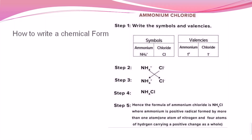Now, how to write a chemical formula — taking the example of ammonium chloride. First we write the symbols and their valencies. Ammonium is NH4 with a positive charge, and chloride is Cl with a negative charge. Then we cross-multiply: the charge of the cation is placed at the bottom of the anion and vice versa. The resulting chemical formula is NH4Cl — ammonium chloride.